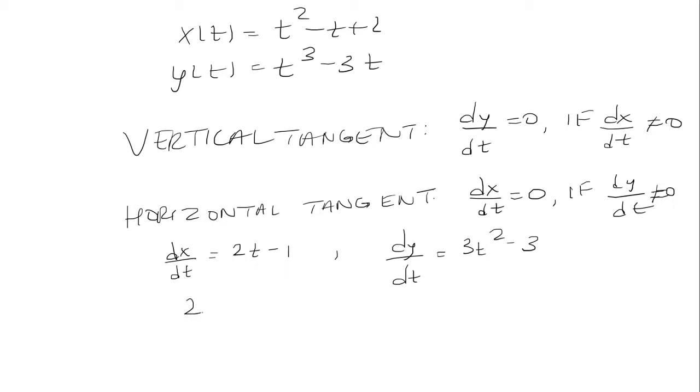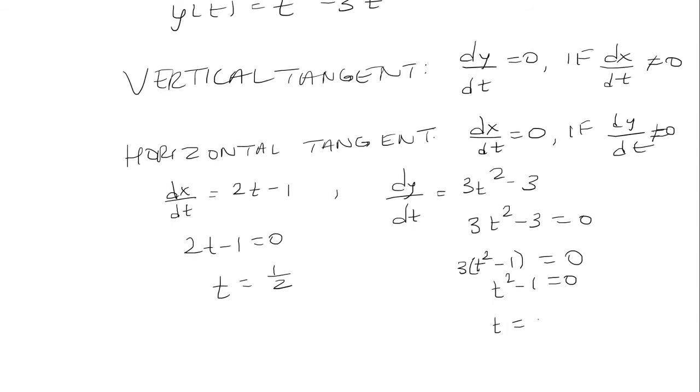So we want to set each one equal to zero. 2t minus 1 equals zero. 3t squared minus 3 equals zero. We get that t is equal to one half. And here we can factor out the 3 and we'll have 3 times t squared minus 1. So t squared minus 1 will have to be equal to zero which means t will be plus or minus 1.